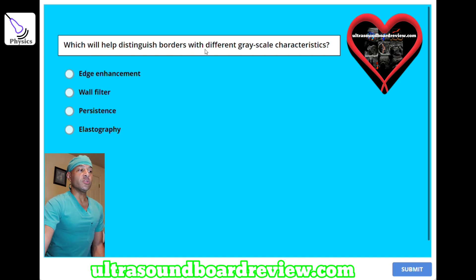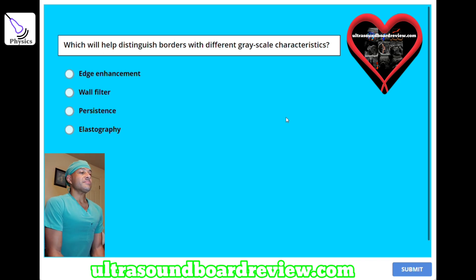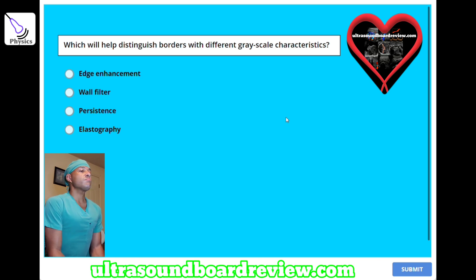Which will help distinguish borders with different grayscale characteristics? A, edge enhancement; B, wall filter; C, persistence; or D, elastography. The answer is A, edge enhancement.